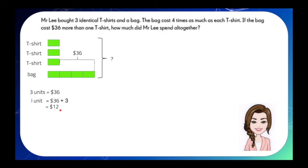So, now that we know the cost of one unit, it's easy for us to find out the amount of total items. So, $12 times 7 units will give us $84. So, the answer to the question is, Mr. Lee spent $84 all together.